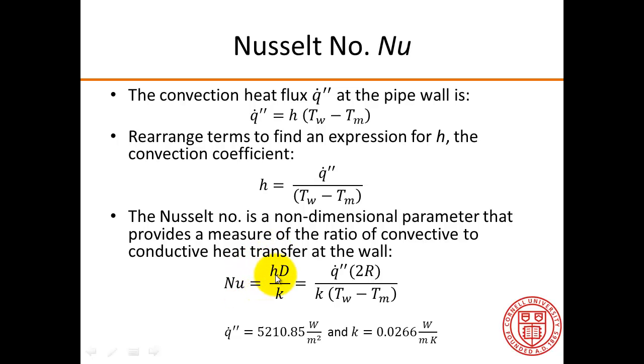So the Nusselt number is HD over K. In this case, D is the diameter of the pipe. And so if we substitute H from this expression here, we get this expression for the Nusselt number, which we will use to evaluate it.